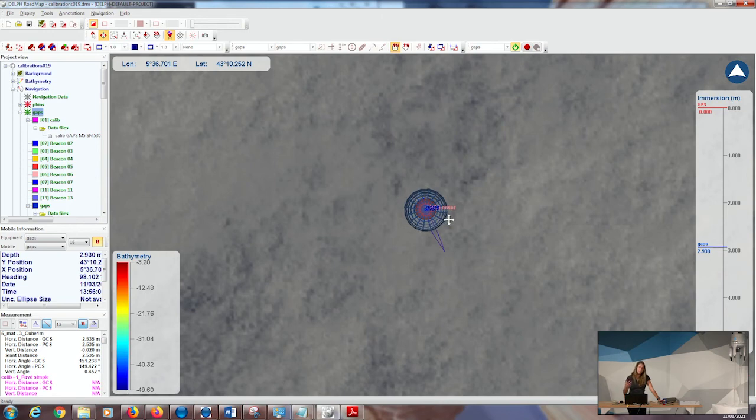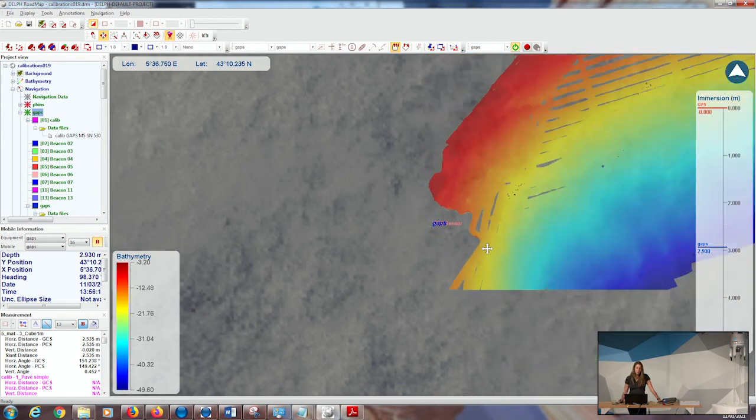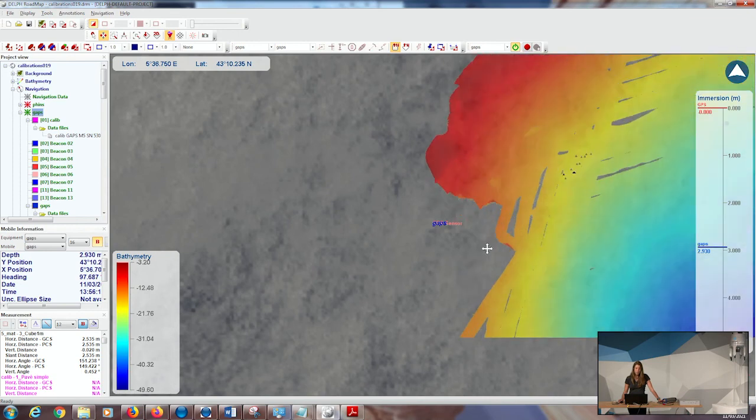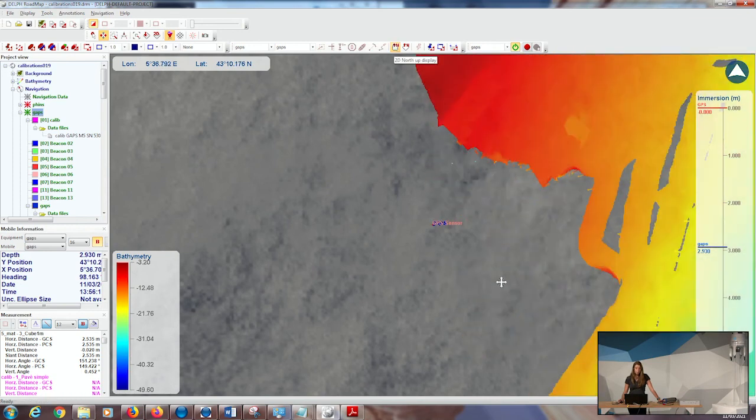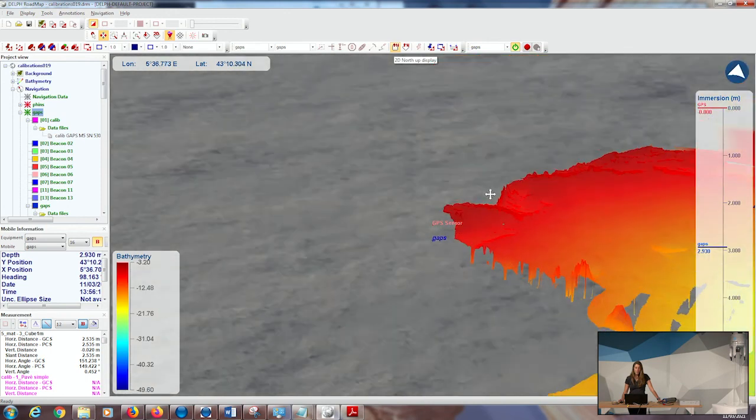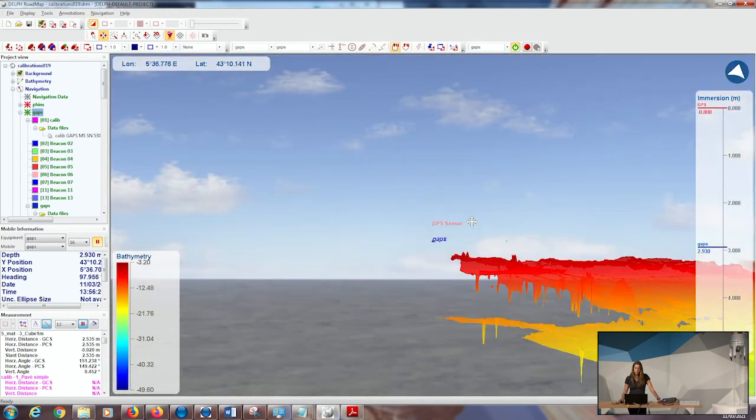So in my example, the GPS position is the same as the GAPS for the simulation. If I unzoom, I can have a global view of my survey area. If I go in a three-dimensional view, I can see here the GPS sensor on the top of the vessel and the GAPS which is deployed on the pole.